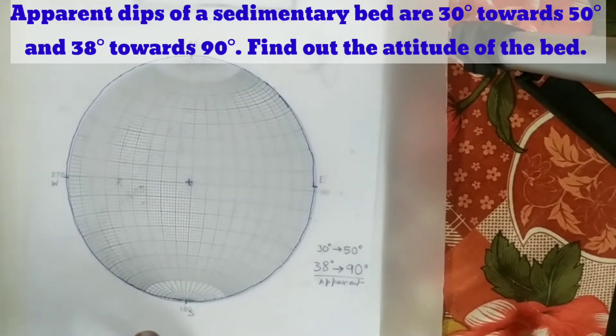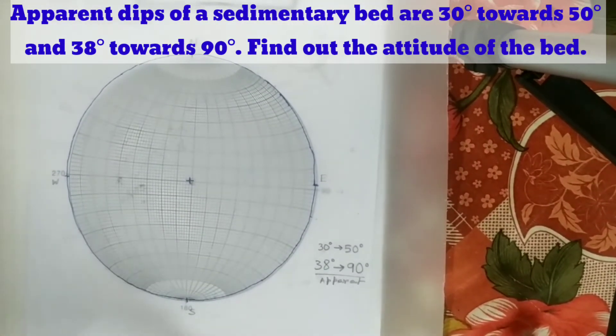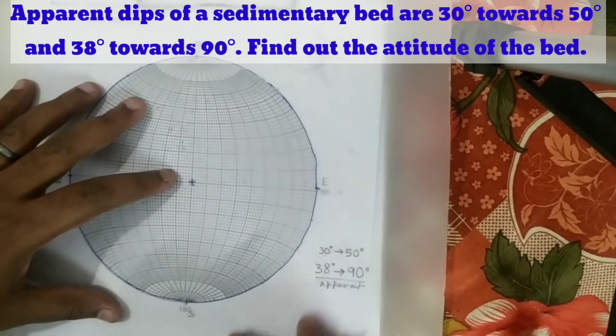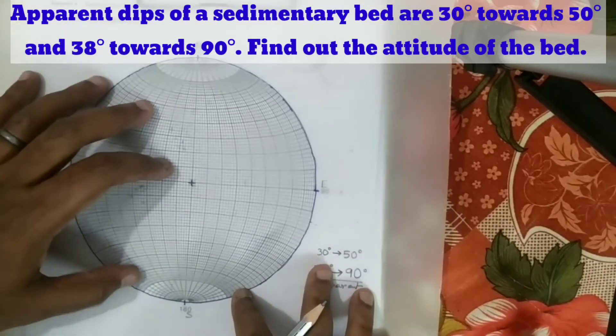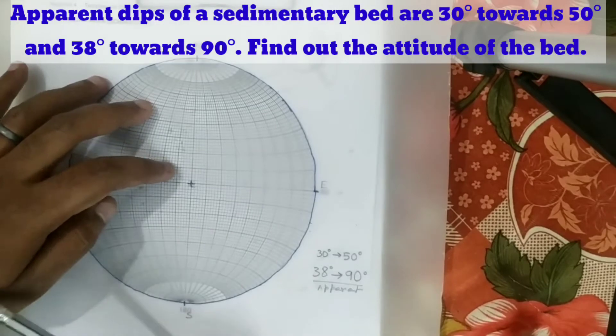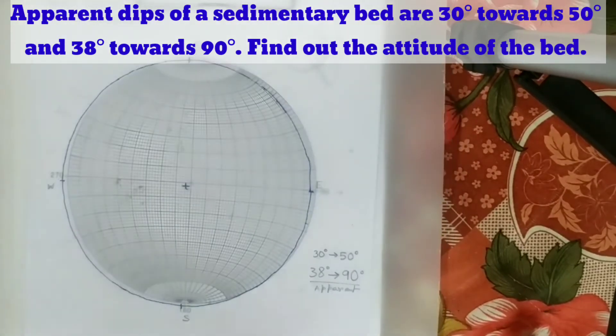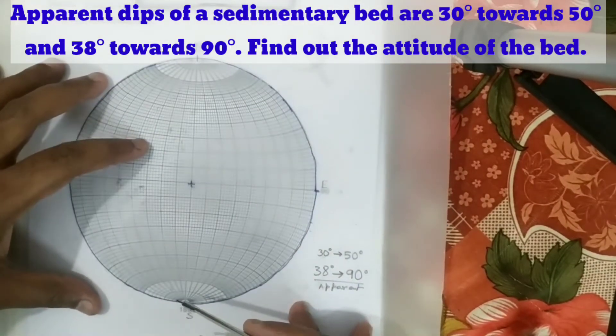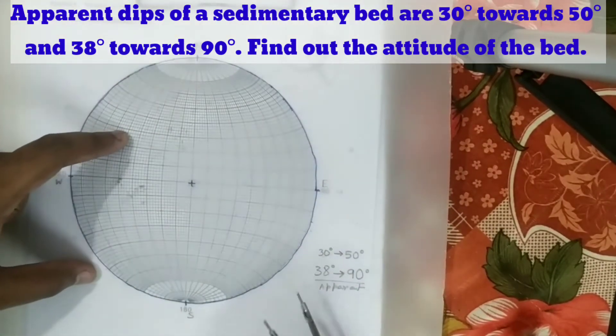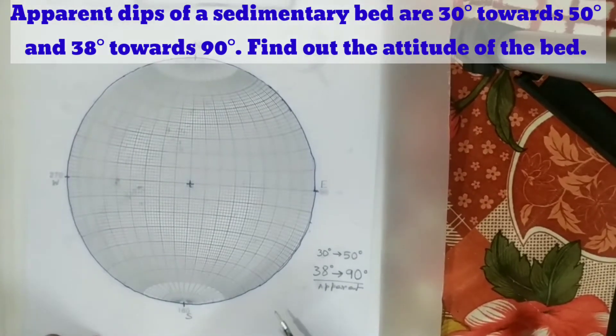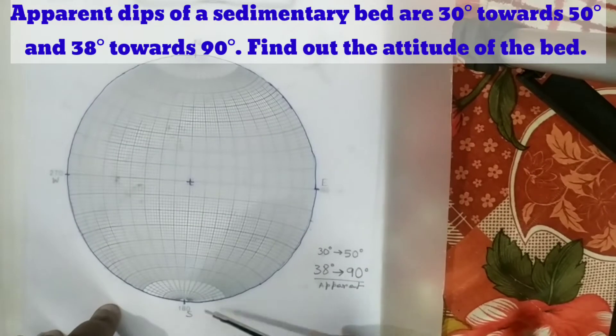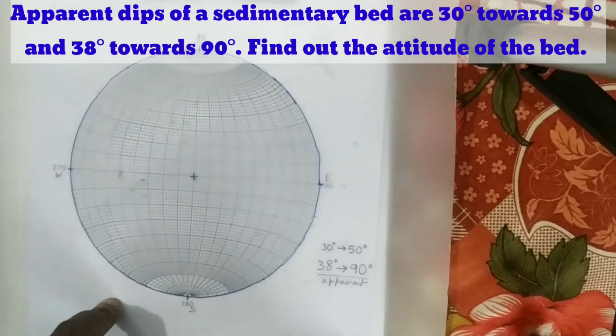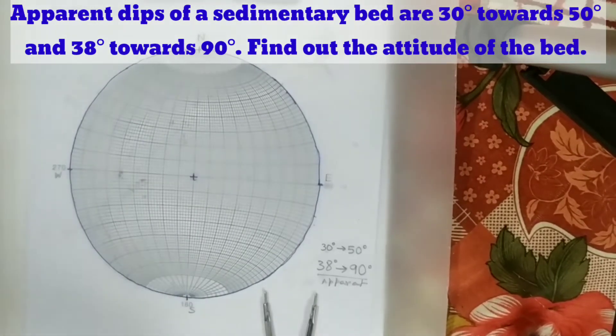Attitude of the bed means the strike and true dip. As you know, true dip is the maximum dip and is measured perpendicular to the strike line. First we need to plot these two apparent dips. There will be a single plane only, so we won't do that in the format of a plane. We will plot these two data just like plunge.